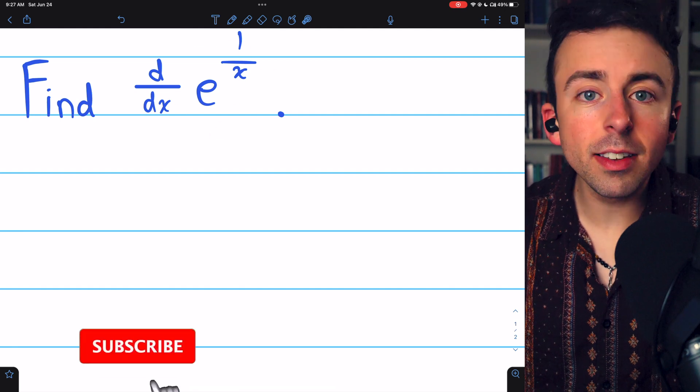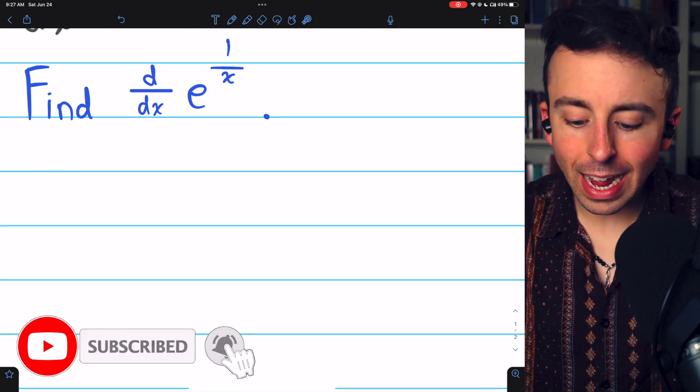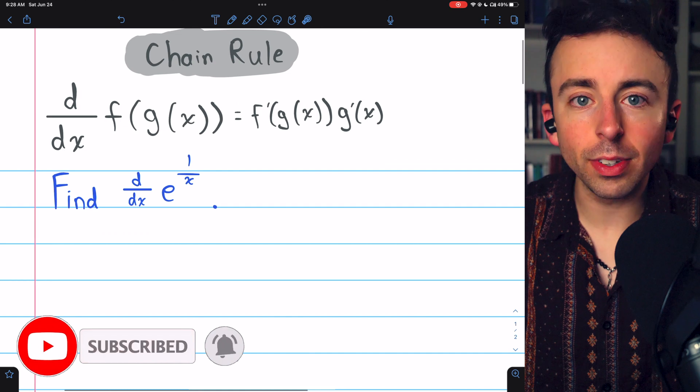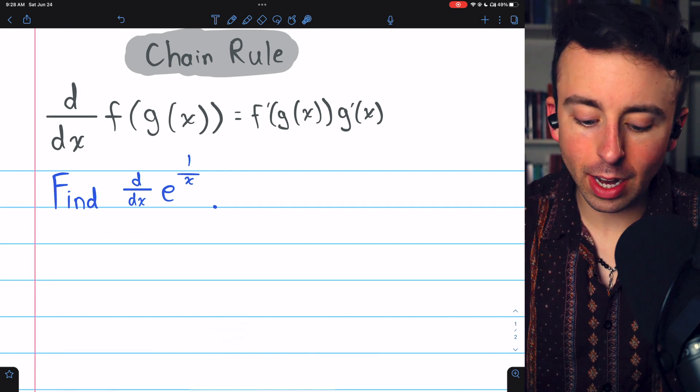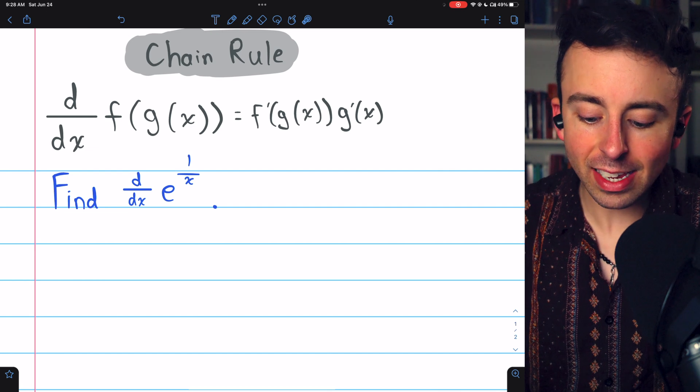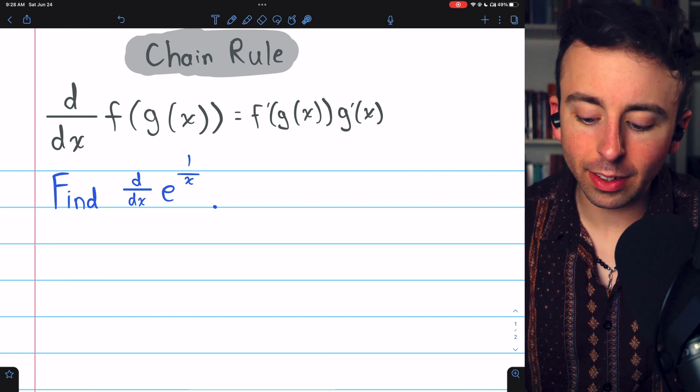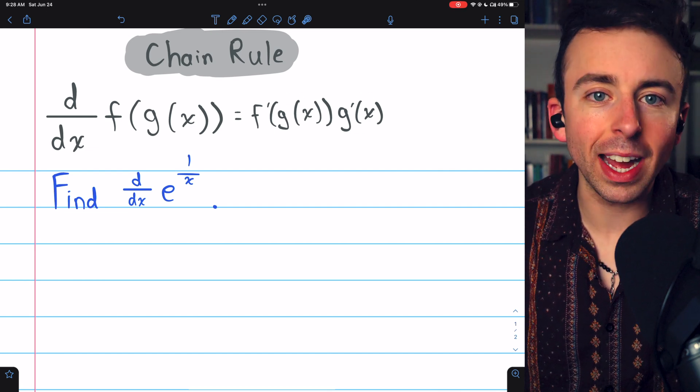e to the 1 over x is a composite function. So to take its derivative we need to use the chain rule which tells us the derivative of a composite function f of g of x is equal to f prime of g of x multiplied by g prime of x.